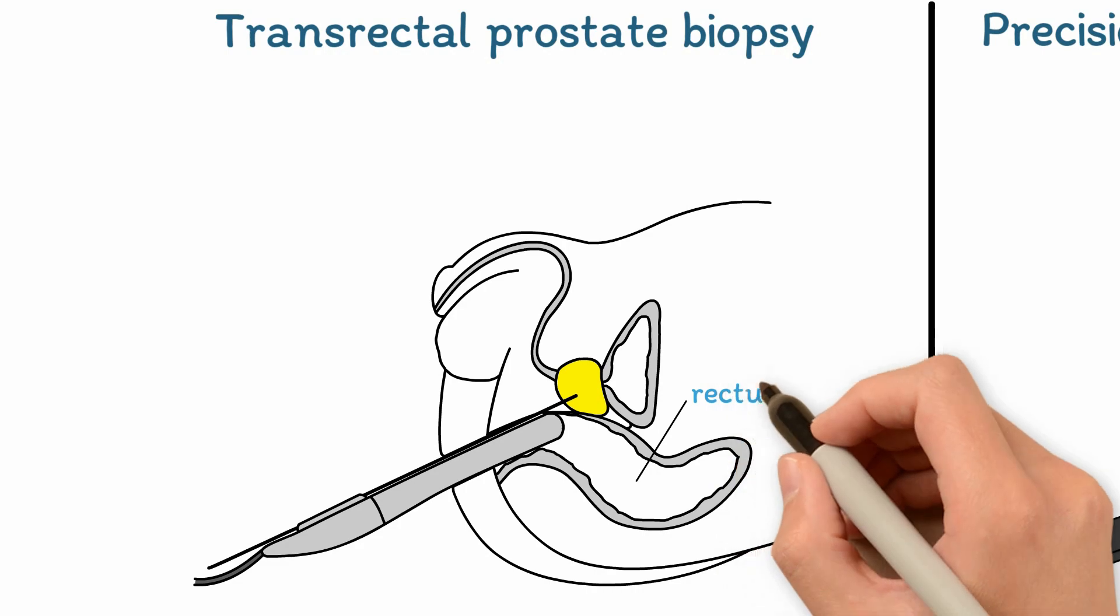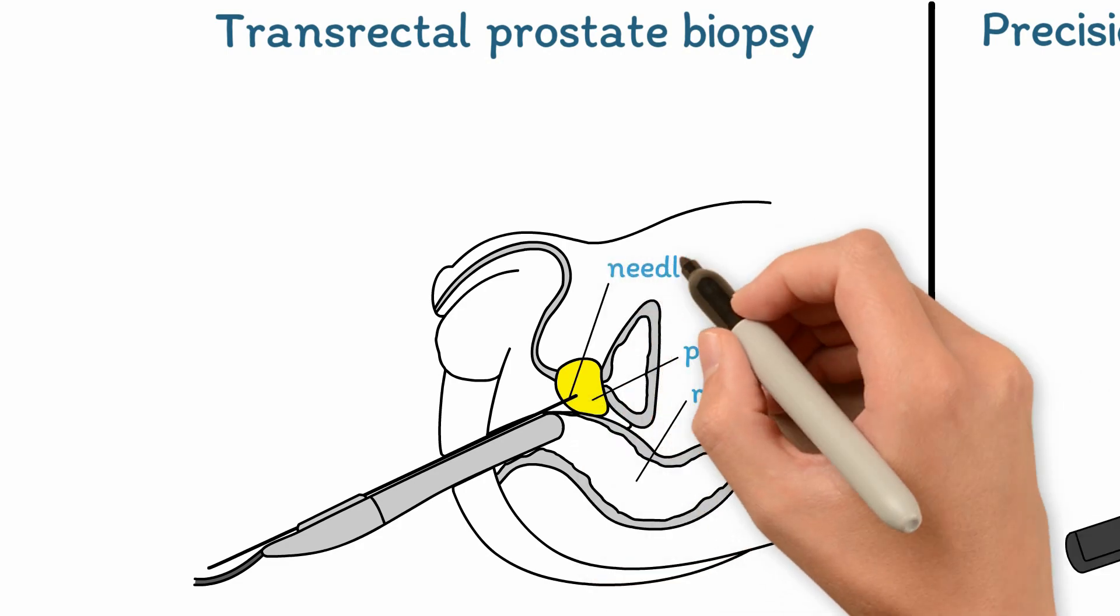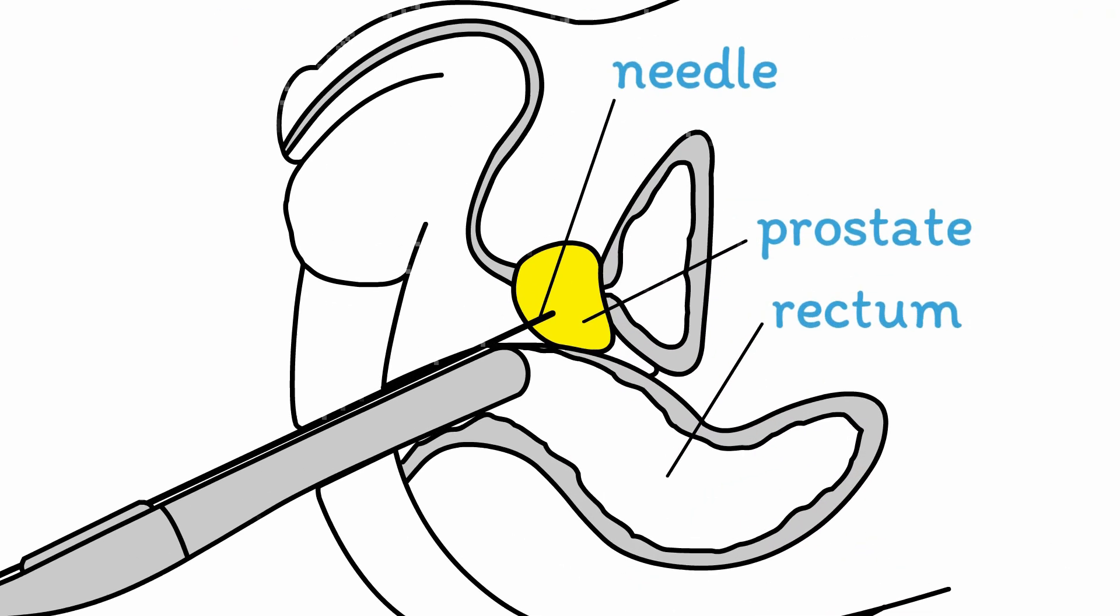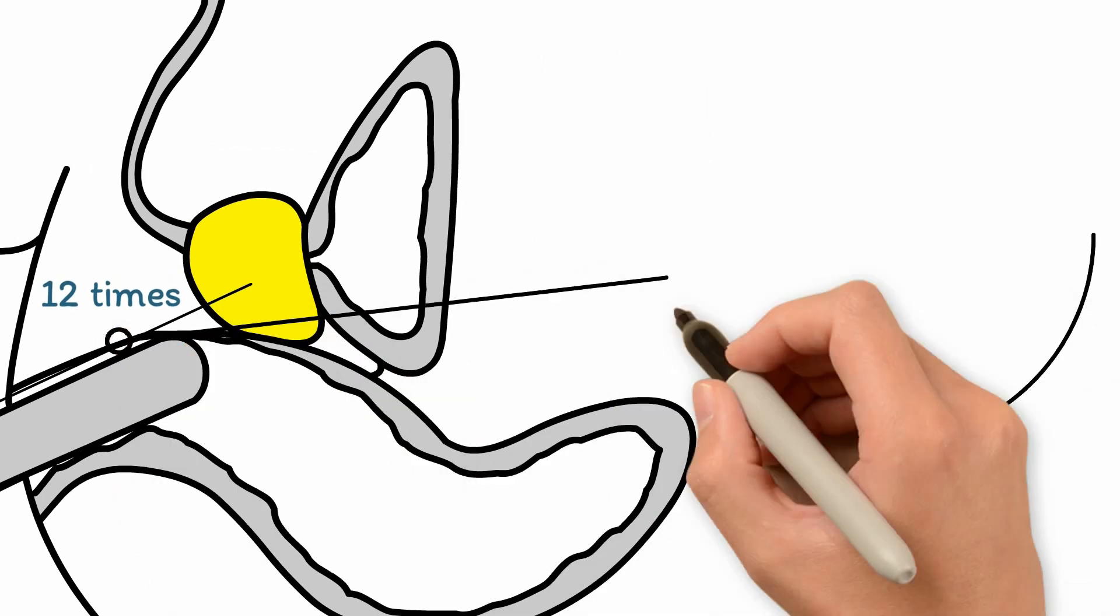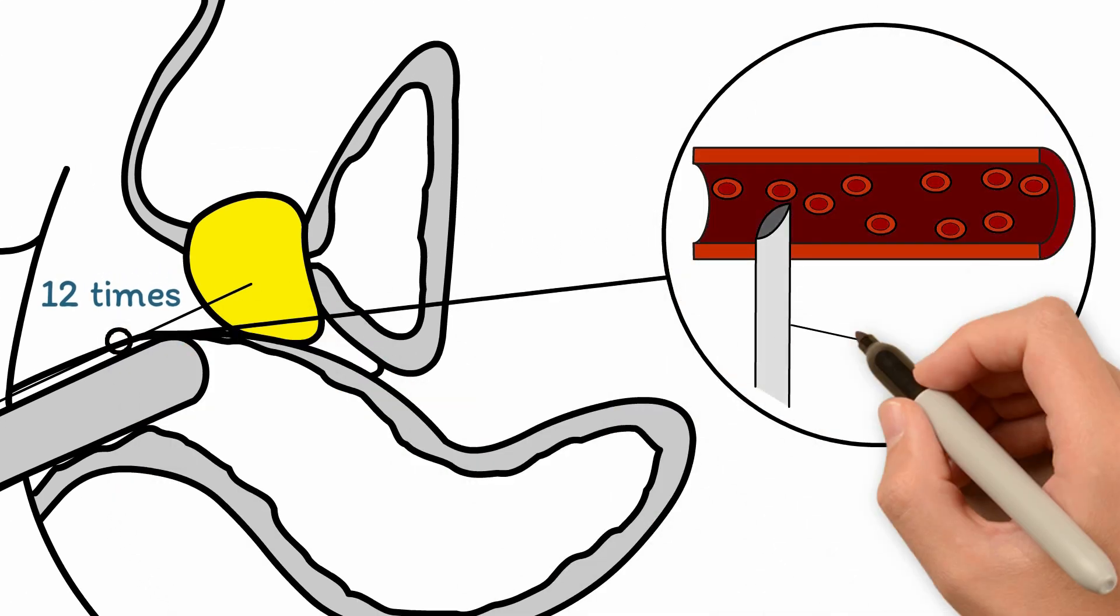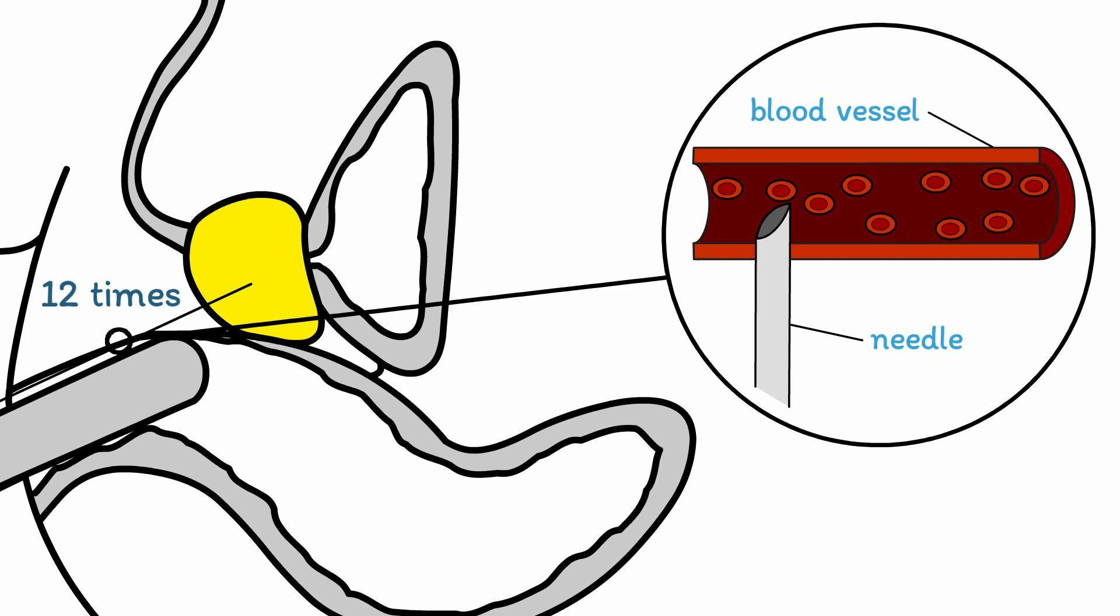Transrectal biopsies get their samples of the prostate by passing a needle through the rectal wall. With a transrectal biopsy, the needle is passed through the rectal wall at least 12 times. This poses a risk to patients because each of these 12 punctures introduces fecal matter into the bloodstream, which can lead to serious infections.